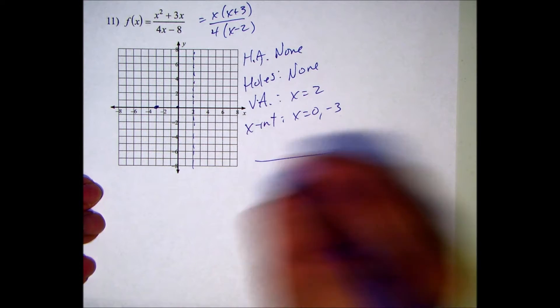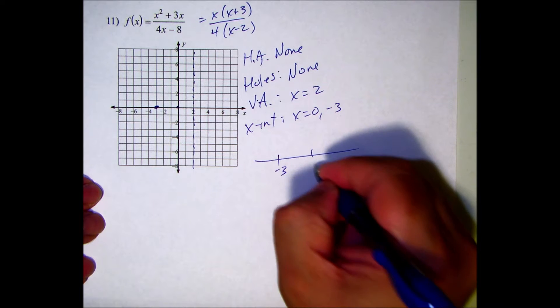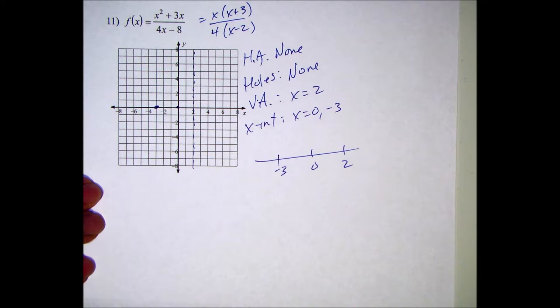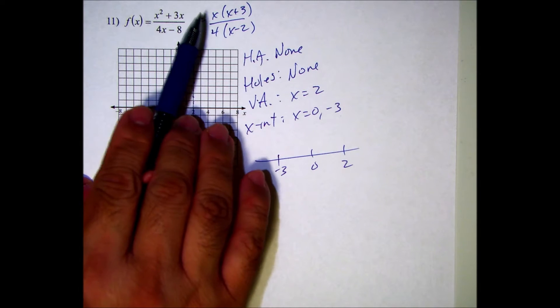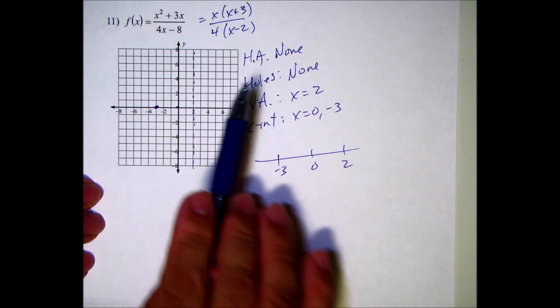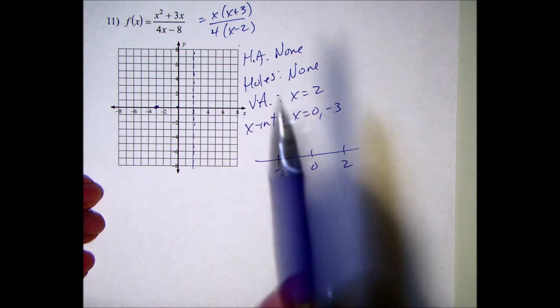Make a sign chart, so that's going to be negative 3, 0, and 2. To the left of negative 3, there's three factors, so that'll be negative, negative, negative, all negative.